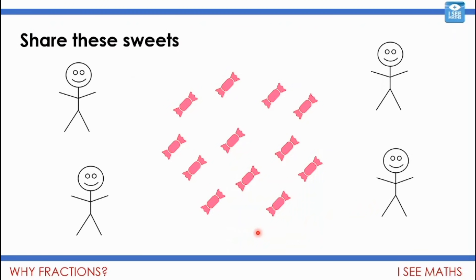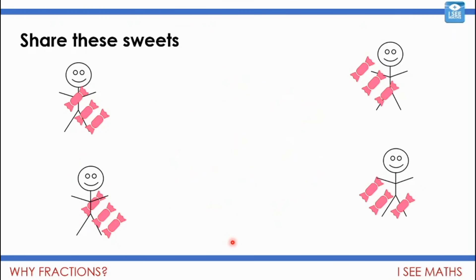Now, fractions can be really useful when we're sharing in some situations. Now, if there were four people and they were sharing these 12 sweets, then we wouldn't need fractions. Why not? Well, we just share them like that. Each of the four people would get three sweets each. So there's no need for fractions there. We've got whole amounts.